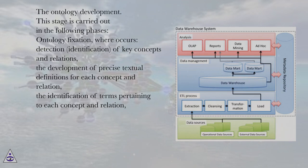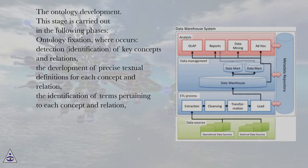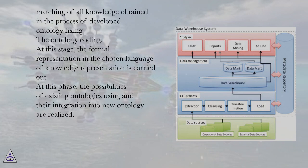The ontology development stage is carried out in the following phases. Ontology fixation, where detection and identification of key concepts and relations occurs. This includes the development of precise textual definitions for each concept and relation, and the identification of terms pertaining to each concept and relation.